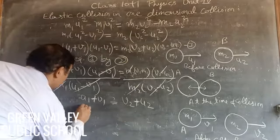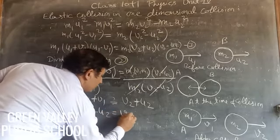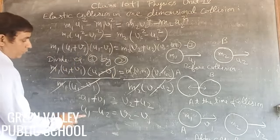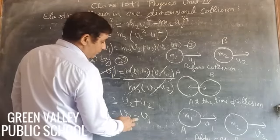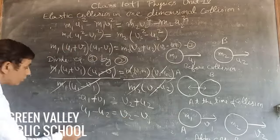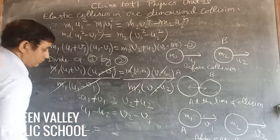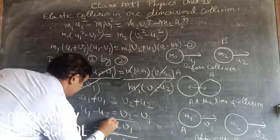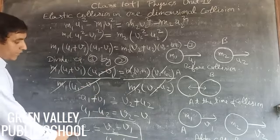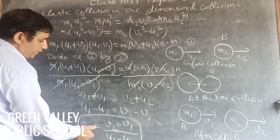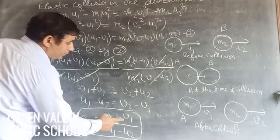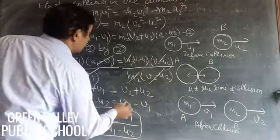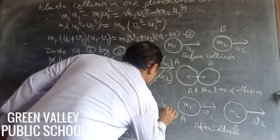On solving, we get U1 minus U2 equals V2 minus V1. This is the relative velocity of approach equal to the relative velocity of separation. We write e equals (V2 minus V1) upon (U1 minus U2), where e is called the coefficient of restitution, defined as the ratio of relative velocity of separation to relative velocity of approach. This is equation number 4 and equation number 5.